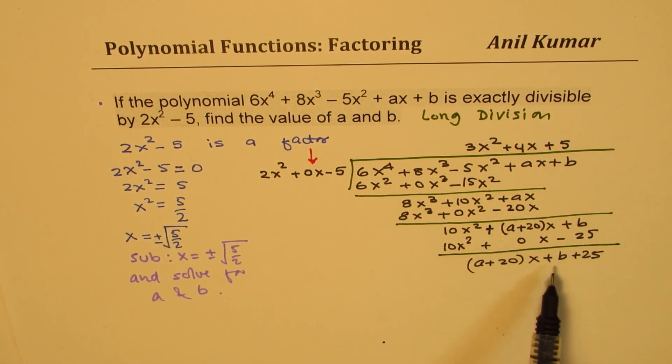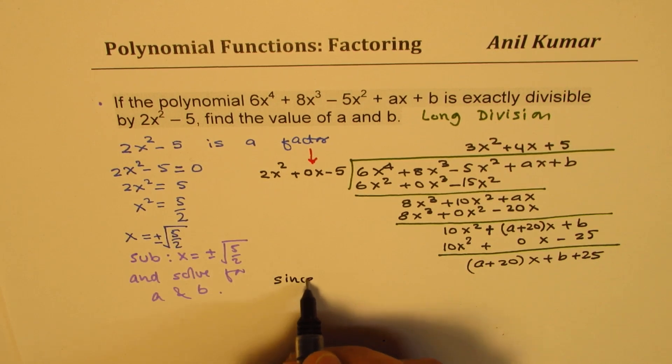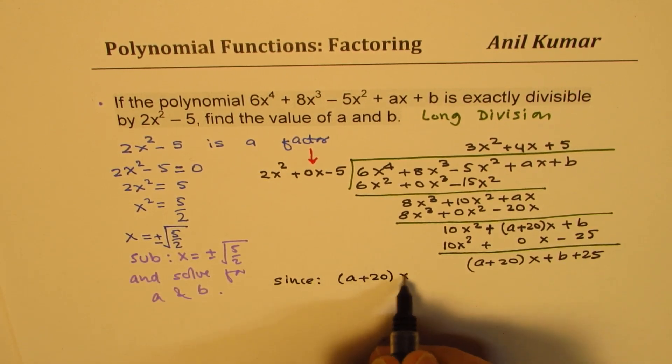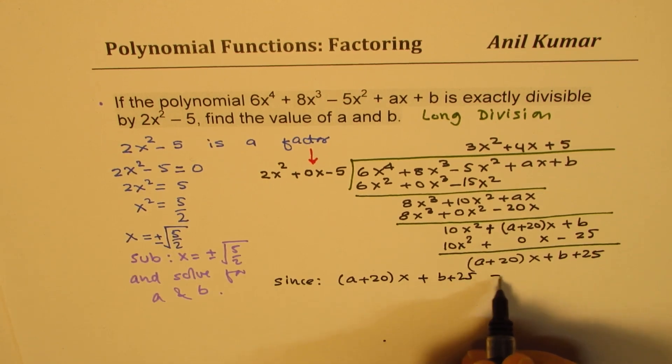Now you say that the remainder should have been 0, because it is a factor. Now since this remainder, which is a plus 20x plus b plus 25 should be equal to 0.